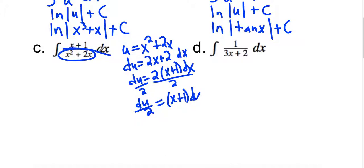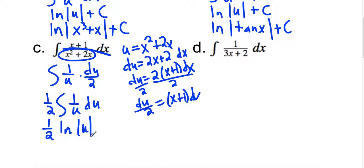And I can replace all of this with du. So that's going to give me 1 over u times du over 2. Pull that 1 half out. Integrate to get the natural log of u. And then we'll plug back in.